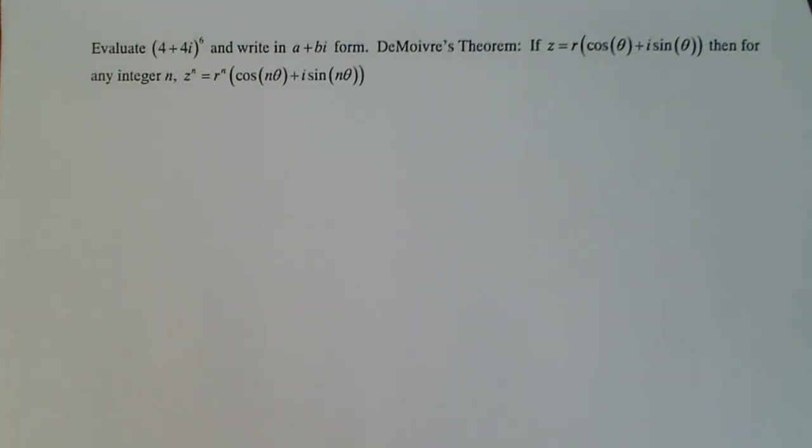We're going to evaluate 4 plus 4i to the sixth power and write it in a plus bi form. We're also going to use DeMoivre's theorem, which is if z equals r cosine theta plus i sine theta, then for any integer n, z to the n equals r to the n cosine n theta plus sine n theta. It's a beautiful theorem. It's very easy to use when you're working with a problem like this.